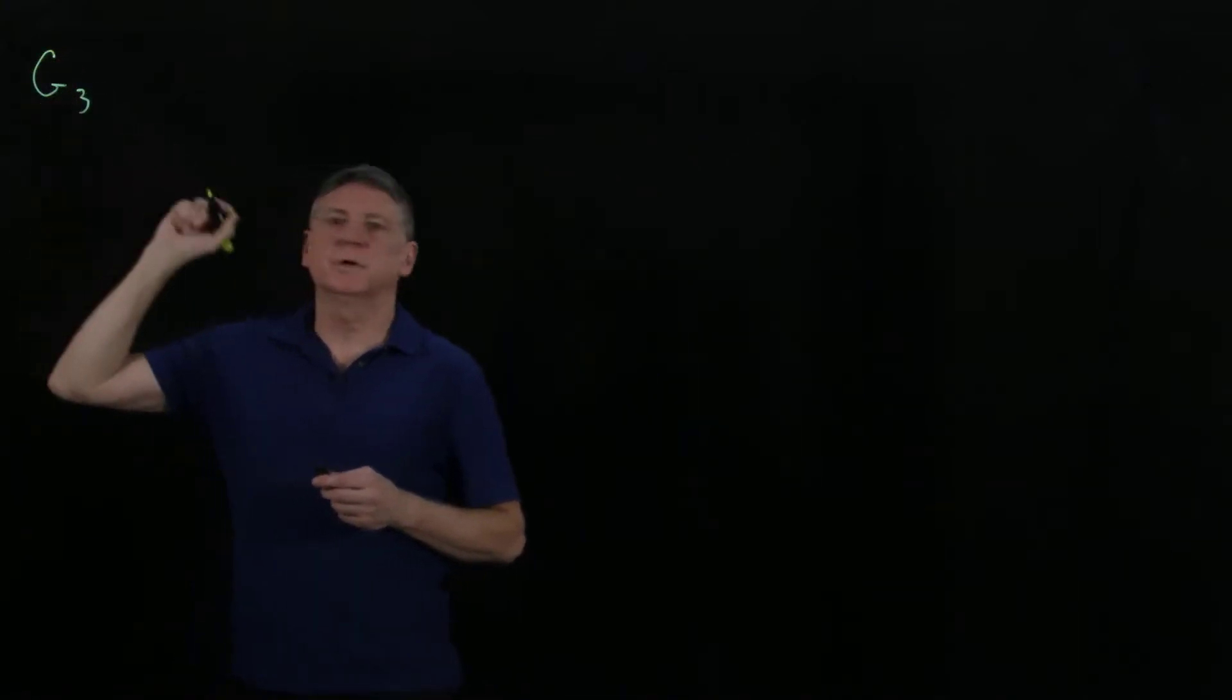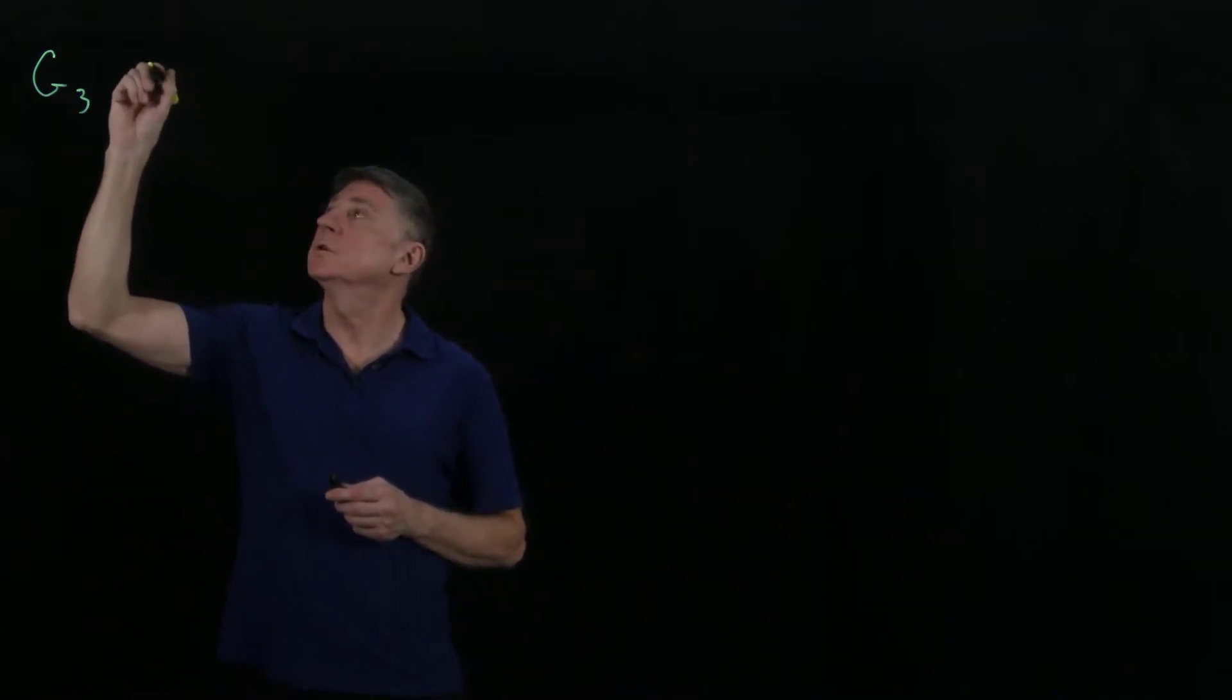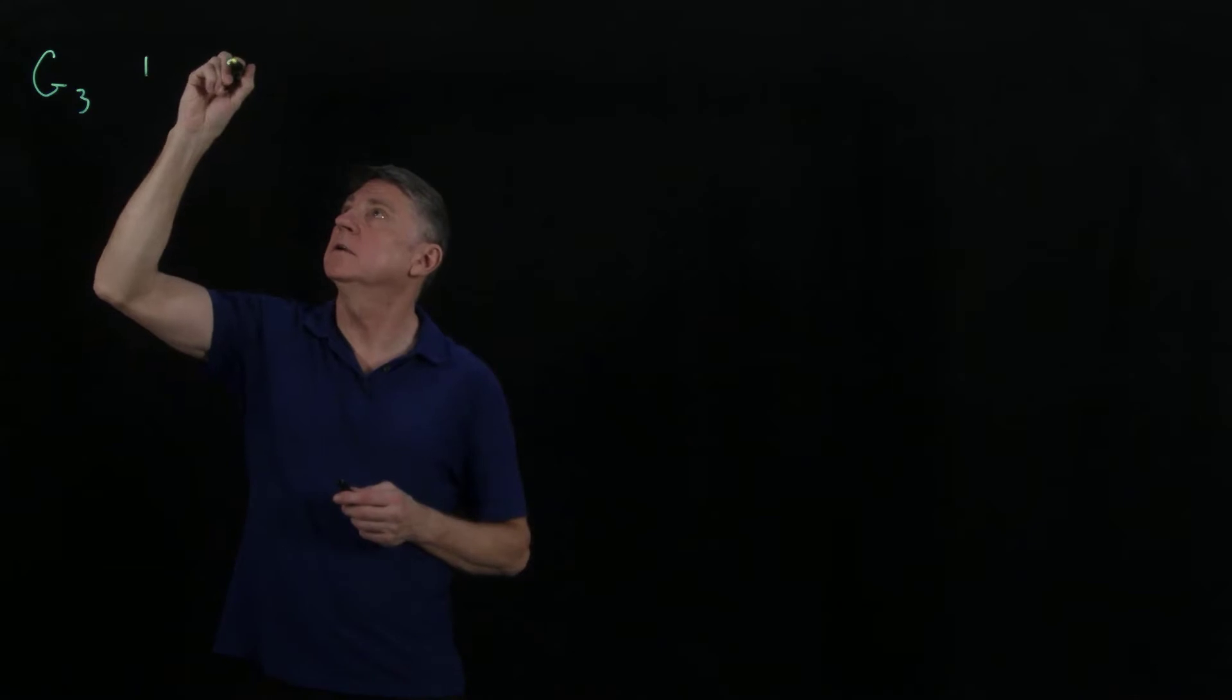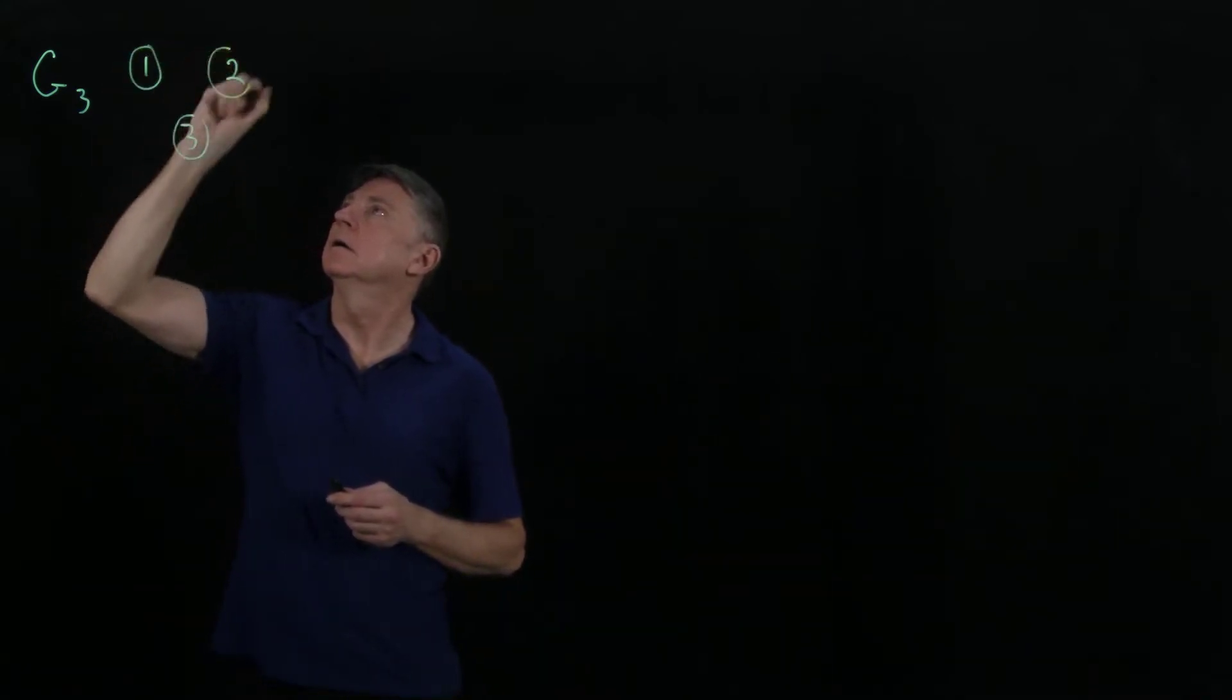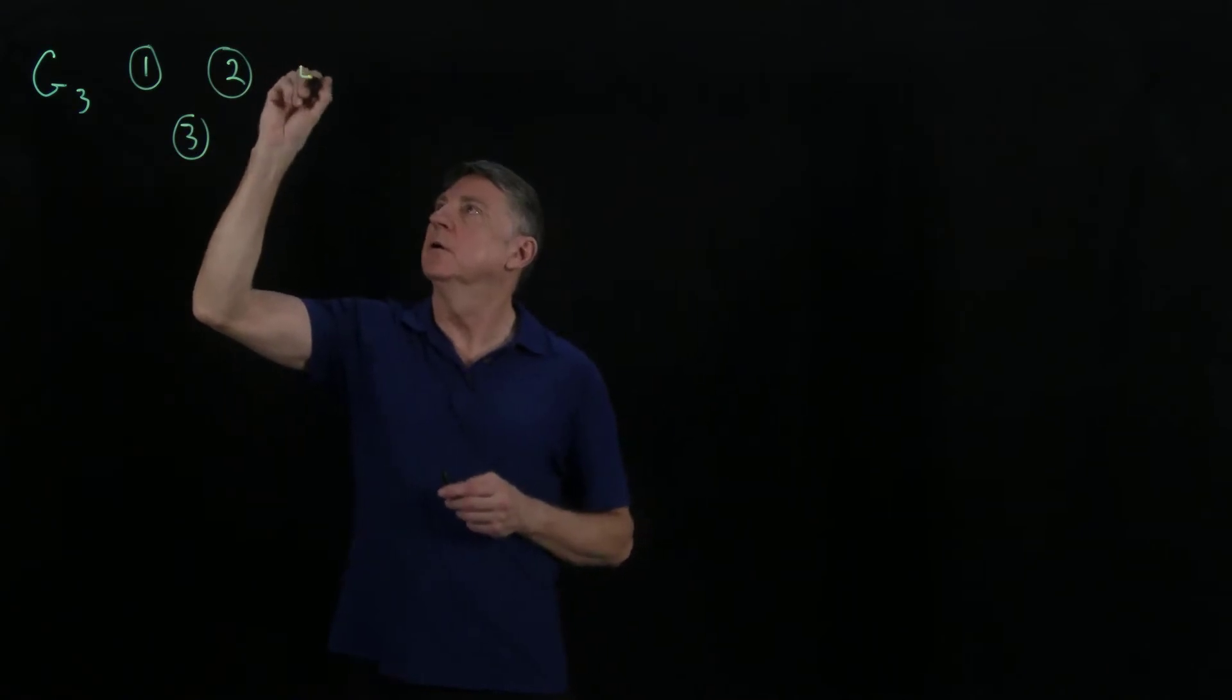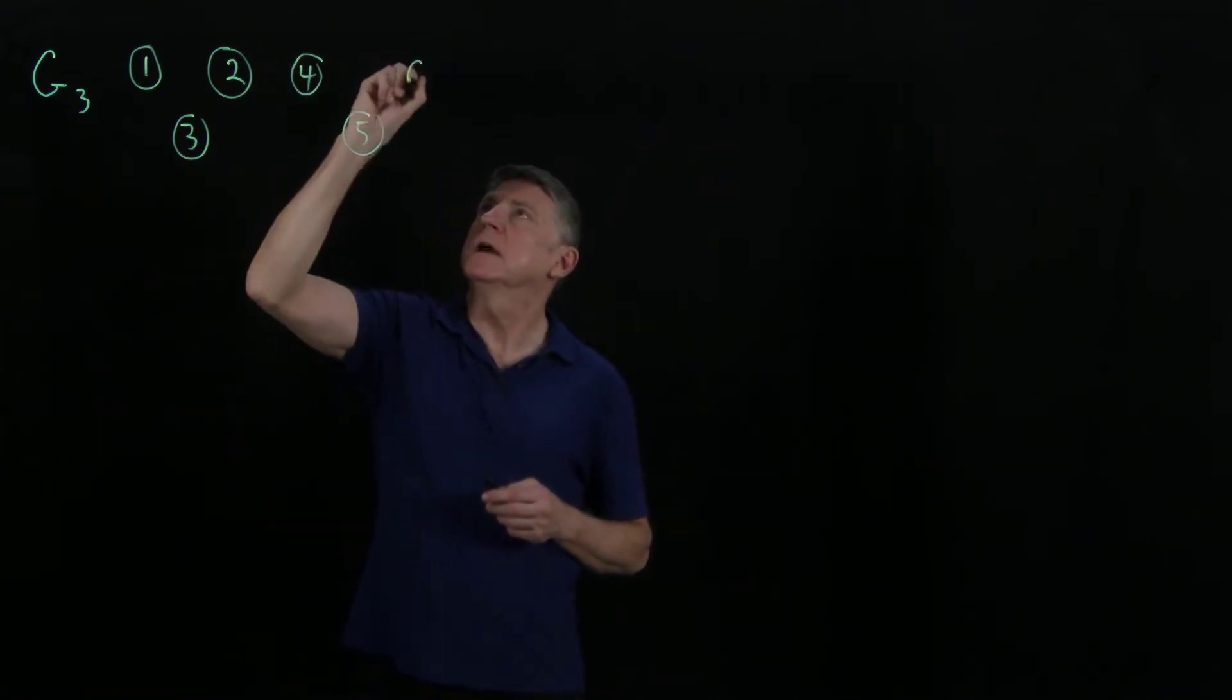Let's suppose that we're given graph 3 and it has six nodes, or vertices, at 1, 2, 3, and 4, 5, and 6.